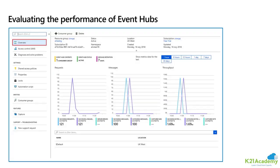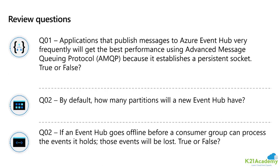We can evaluate the performance of Event Hub using functionality embedded inside the service — checking whether Event Hub is active, healthy, how many messages are there, and how much data is being retained. If data retention is going up, it means consumers are not consuming data at that point in time, but there is no data loss. Even if a consumer fails, the data is stored in Event Hub. By default, Event Hub has 2 partitions. Applications that publish messages very frequently get the best performance using the Advanced Message Queuing Protocol, as it establishes a persistent socket.